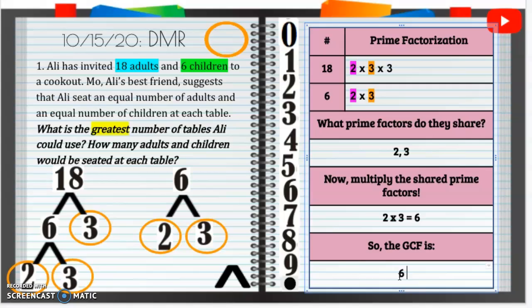But 6 what? What is this 6 representing? Well, this 6 is... Actually, I'm going to put this 6 right up here. 6 is going to represent the greatest number of tables. So 6 tables is the greatest common factor. I'm going to actually put that in red. So we know that's part of our answer.